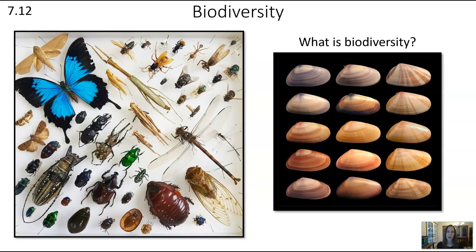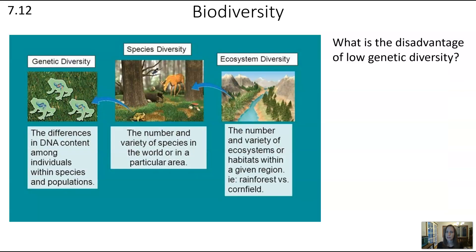Now let's move on to 7.12, which is looking at biodiversity. What is biodiversity? Biodiversity is simply the diversity — the differences you see across areas of living things. This can be at three different levels: genetic diversity is the differences in genes within a population; species diversity is the number and variety of species in a particular spot; and ecosystem diversity is how many different ecosystems or habitats are within a given region.